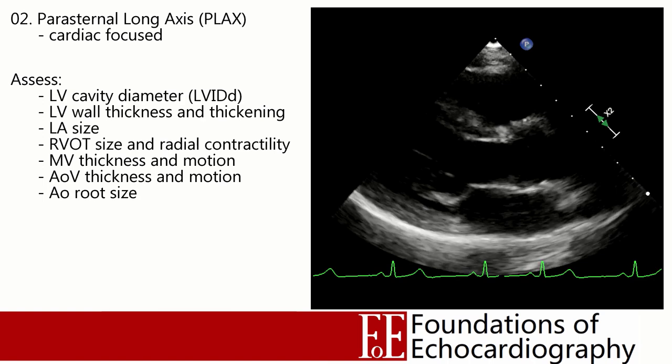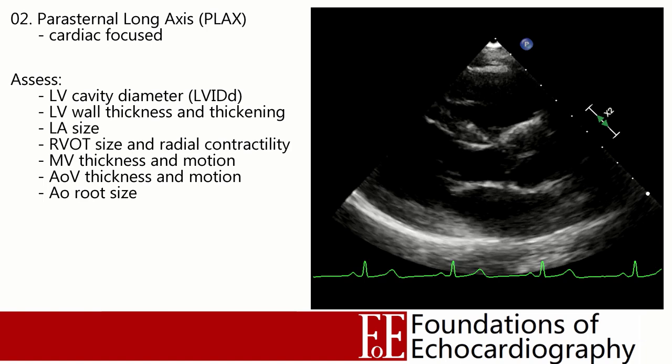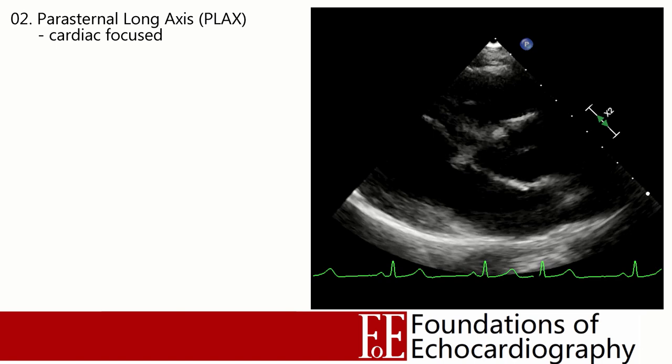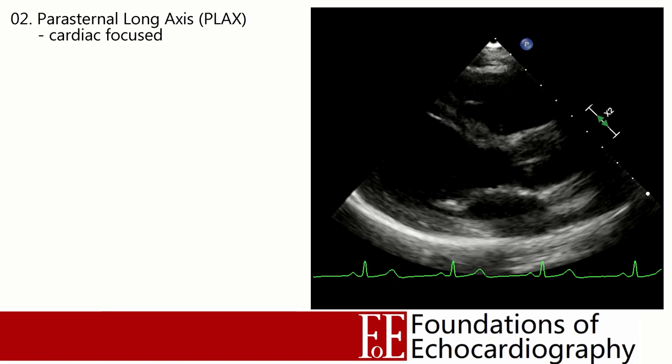Visually inspect the aortic root for dilation. In general, the right ventricular outflow tract, aortic root and left atrium should all be roughly the same size. There are many pathologies which can cause these structures to dilate, but very few that cause them to get smaller. A useful tip: if one or two of these three structures appears larger than the others, the larger one is likely the one with the abnormality.